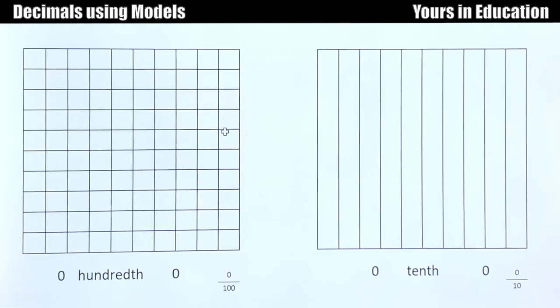So now we have zero hundredths and zero tenths. Now what do I have here? I have 1 hundredth, and you write that as a decimal 0.01, and it's 1 out of 100. Do we have 1 tenth? No, we don't have anything at all.